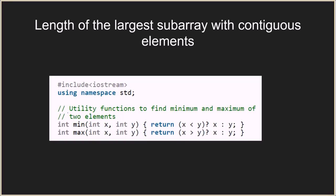First, we have two utility methods that take two integer values x and y as arguments and find the minimum and maximum values. They simply compare: if x is smaller than y, return x; otherwise return y. If x is greater than y, return x; otherwise return y. These are basic utility functions to calculate the minimum and maximum when given two input values.